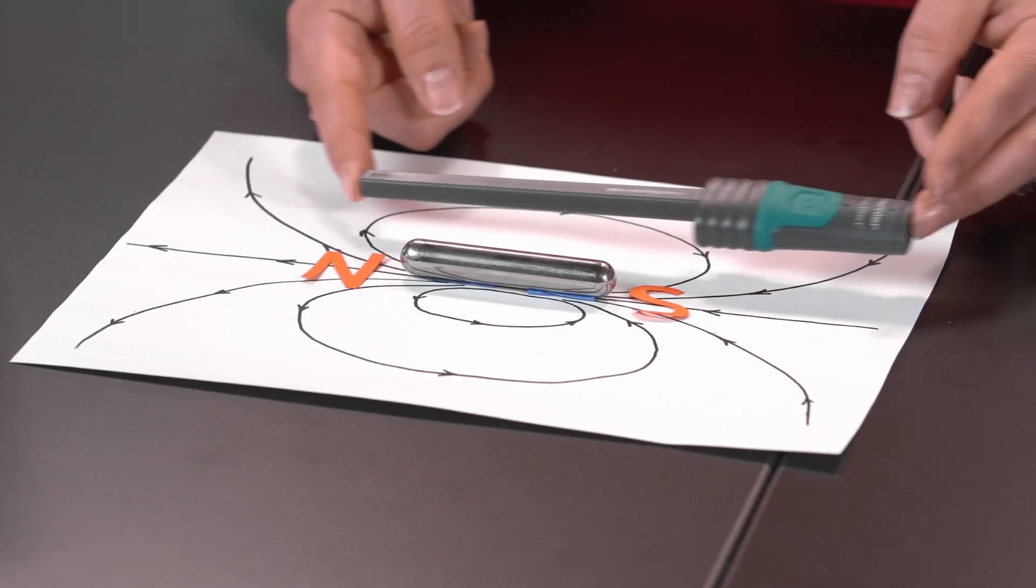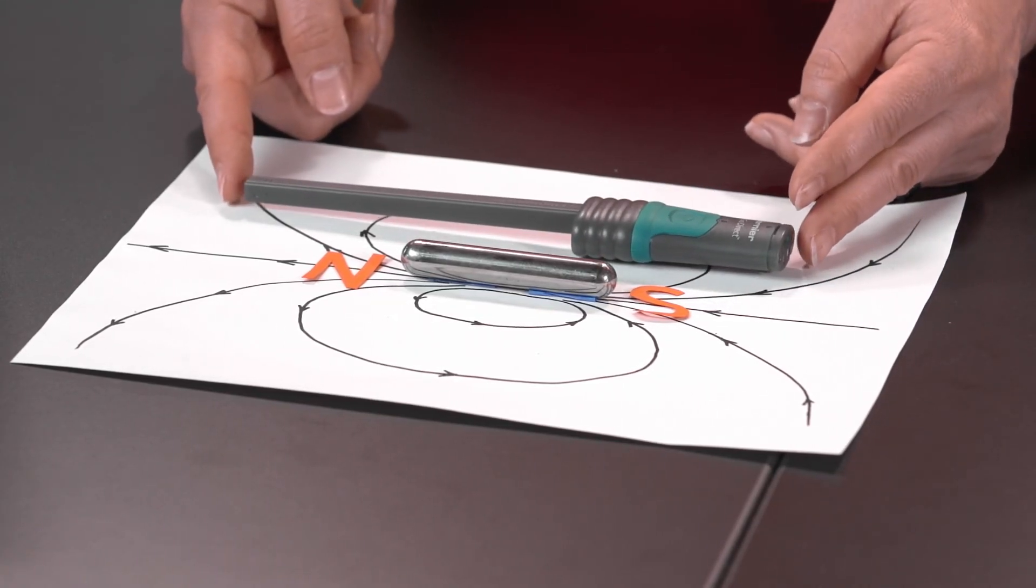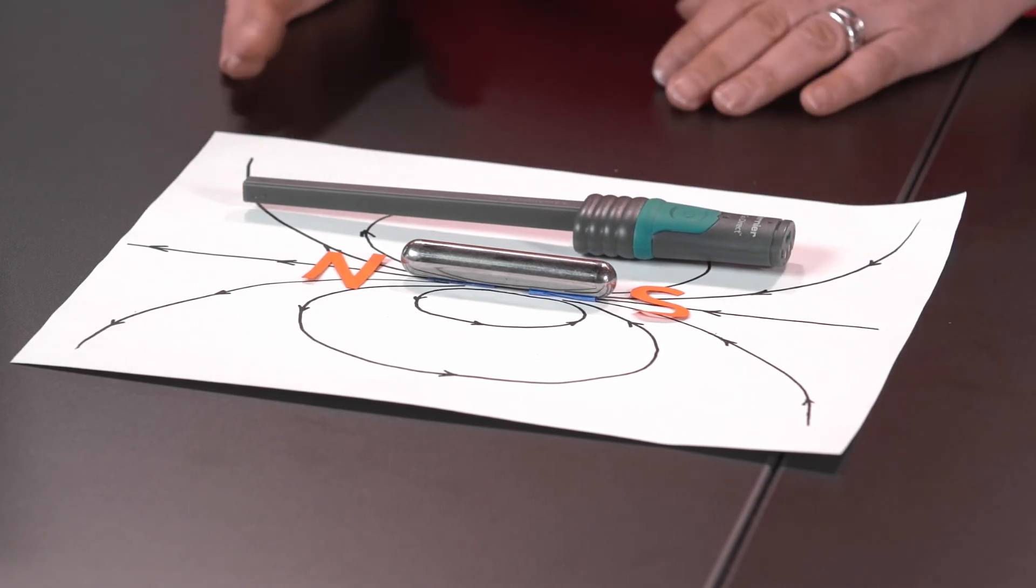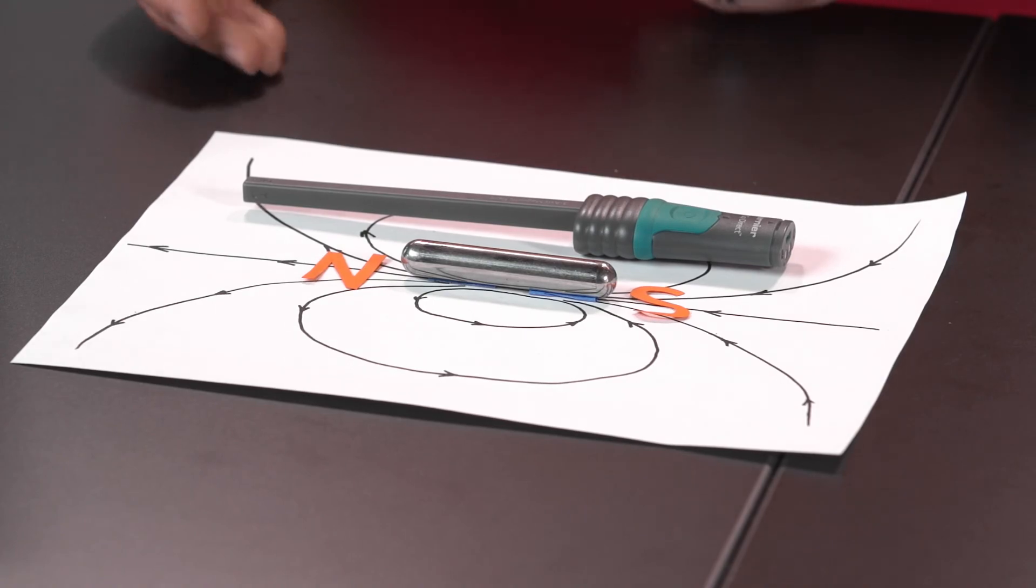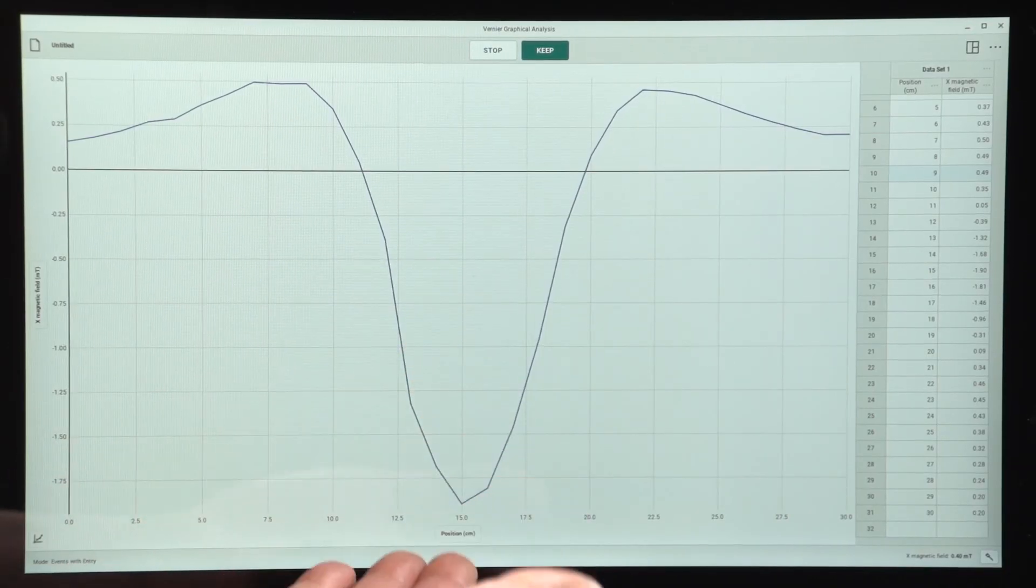And then, as we bring the wand all the way past the magnet, again, the magnetic field line is crossing at an angle. But this time, the angle is again more in the direction of the wand rather than in the direction against the wand. So we get another positive value and not as great as the negative value from the center.